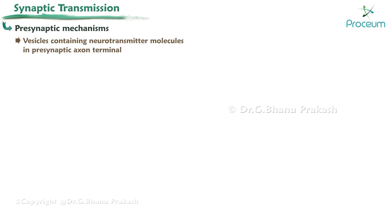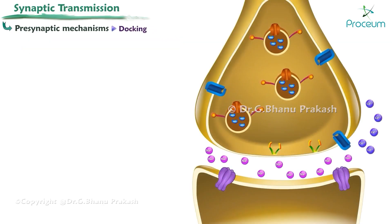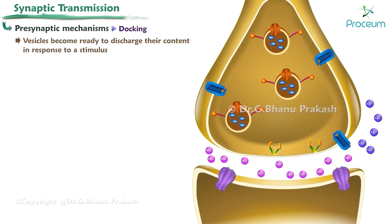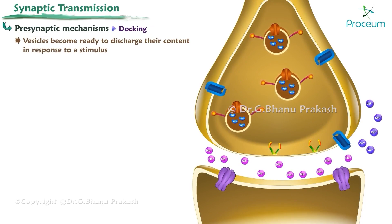Vesicles containing neurotransmitter molecules are concentrated at the active zone of the presynaptic axon terminal and undergo docking and priming. Docking is the process by which the vesicles become ready to discharge their content in response to a stimulus.